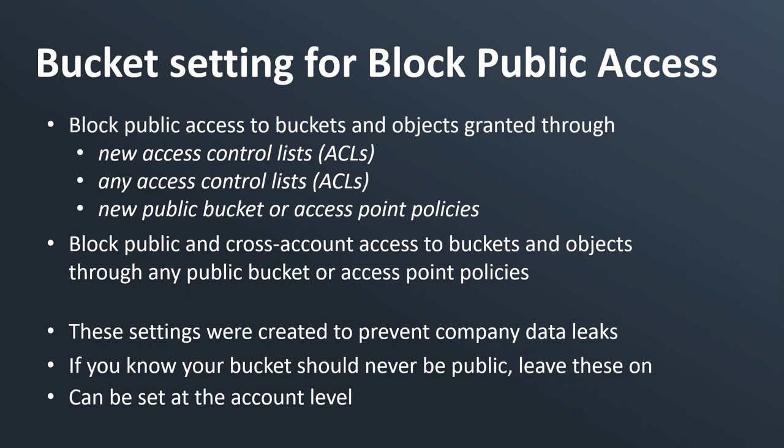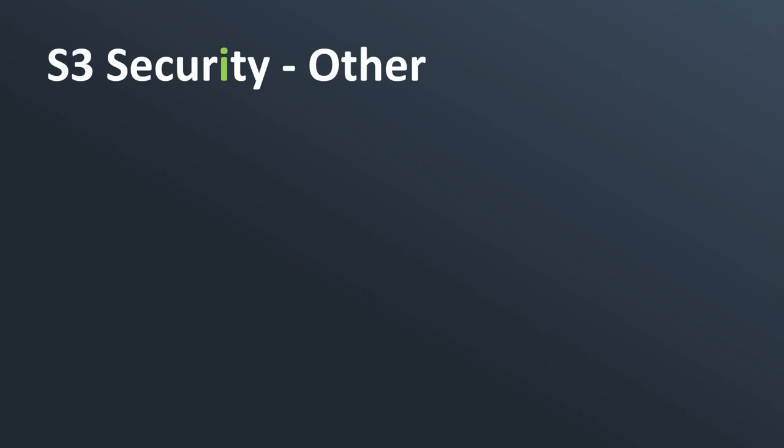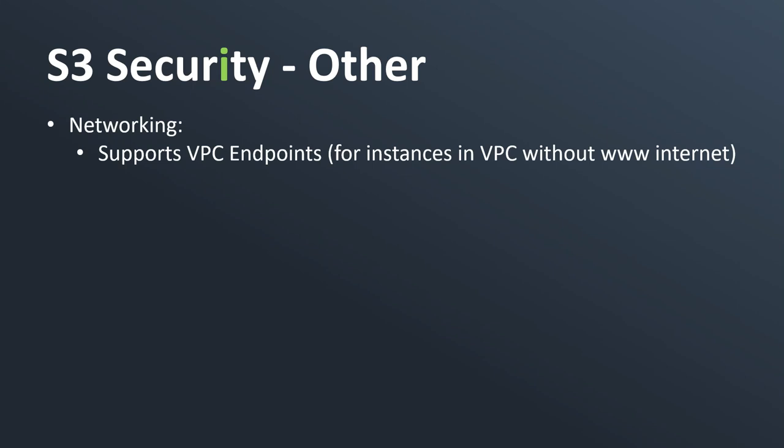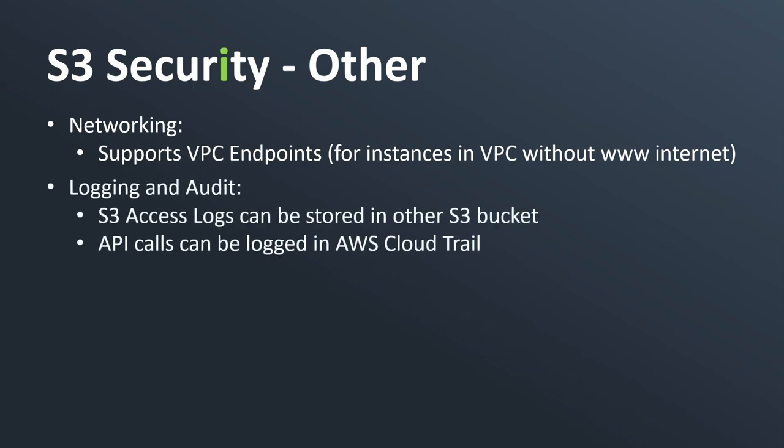For other S3 security features: on the networking side, you can access S3 privately through a VPC endpoint — so EC2 instances without internet access can reach S3 privately. For logging and audit, you can use S3 access logs stored in another S3 bucket, and API calls can also be logged in CloudTrail, which is a service to log API calls in your account.